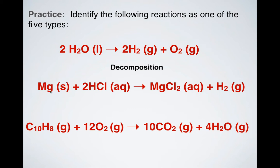What about this? I've got magnesium mixed with some hydrochloric acid, and I'm making magnesium chloride and hydrogen gas. So what do you think is happening here? It's a single displacement. Notice magnesium and chlorine are pairing up, and then I've got my hydrogen, which is all by itself now as a gas.